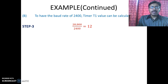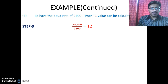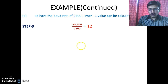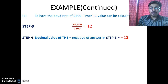In the same way we can find out the value required to be loaded into Timer 1 to have a baud rate of 2400. The first two steps are the same as in the previous example. Here we divide 28800 Hz — the frequency provided by UART circuitry to Timer 1 — by 2400, the baud rate we want to set, and we get the answer equal to 12. So the decimal value required to be loaded into TH1 is minus 12 to have a baud rate of 2400 bits per second.